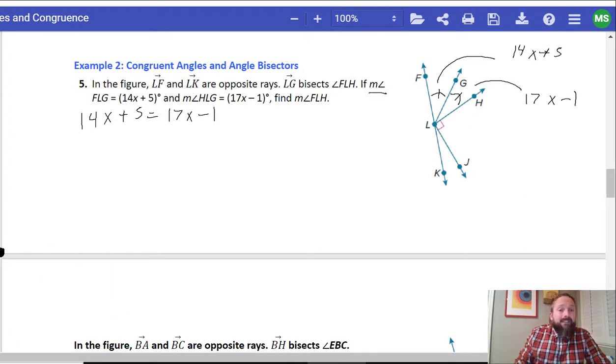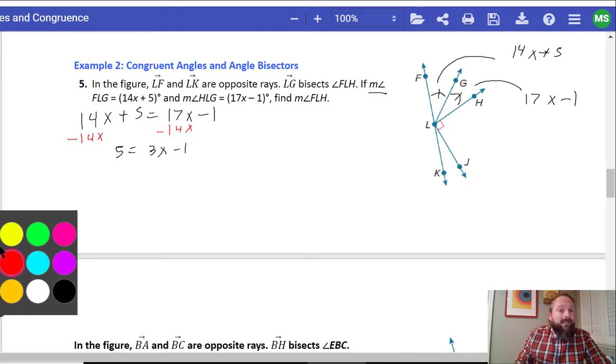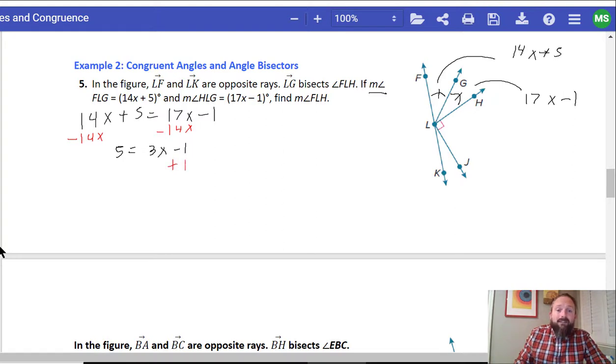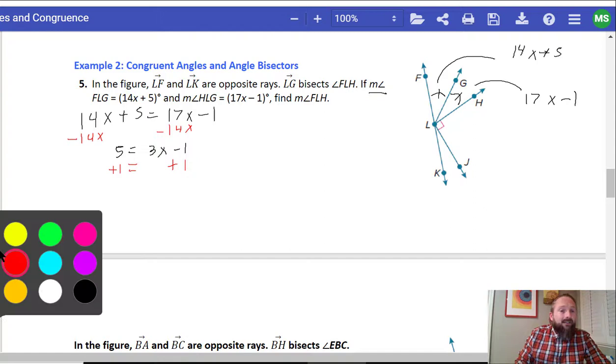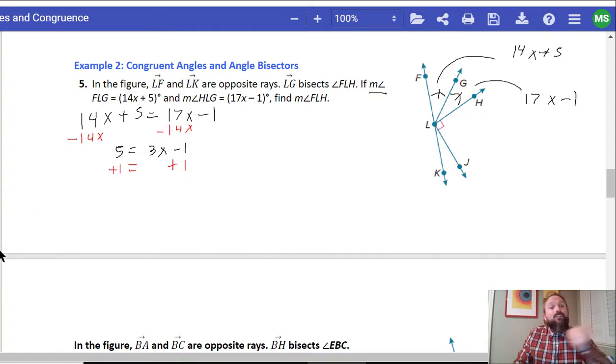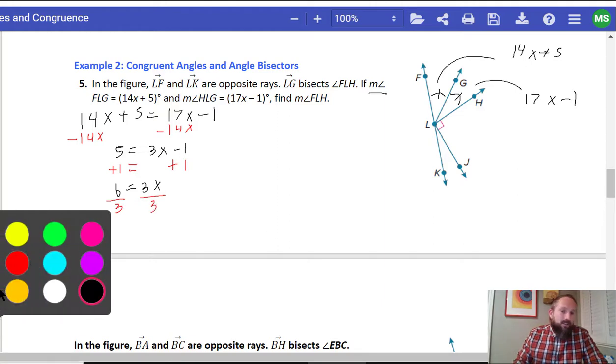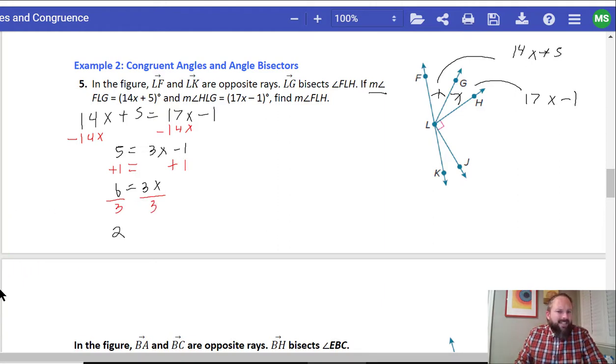So we understand this is the angle bisector. So after we say that they're equal to each other, we're going to get X by itself by doing the subtraction property of equality. Remember in module 12, we're going to be doing two column proofs. And we need to justify our answers. So after we simplify, we get 3X minus 1 is equal to 5. And if we add one to both sides using the addition property of equality, we get 6 is equal to 3X. Now, maybe we were able to do it in our heads and do the division property of equality in both sides. We understand that X is equal to 2.